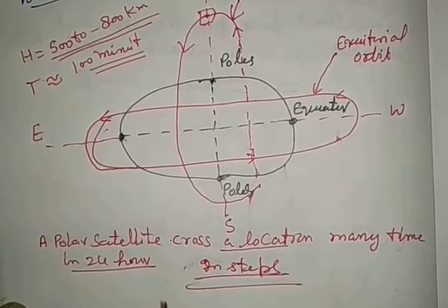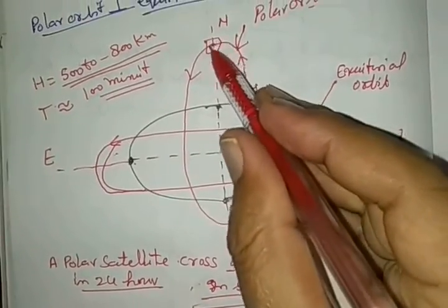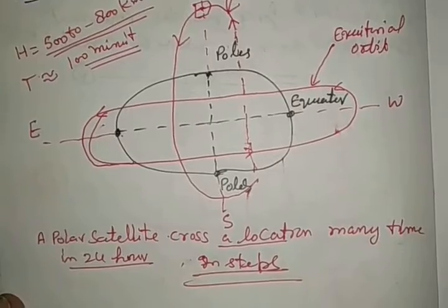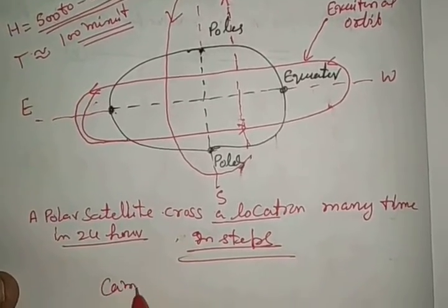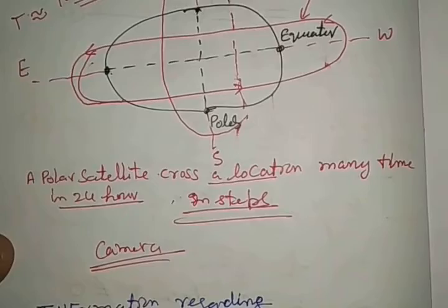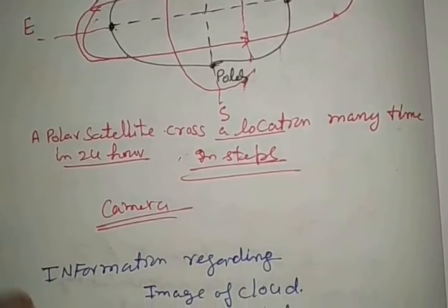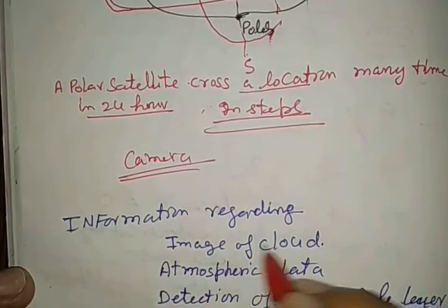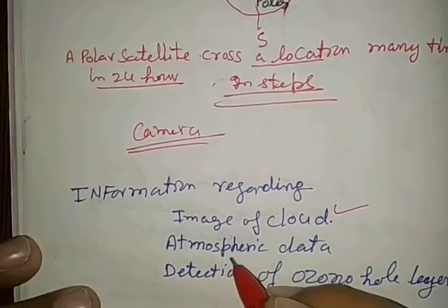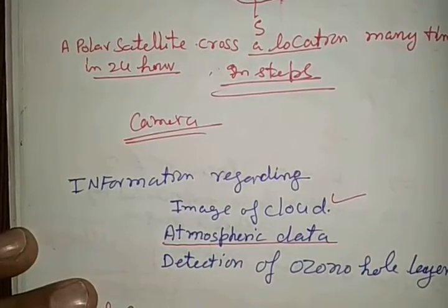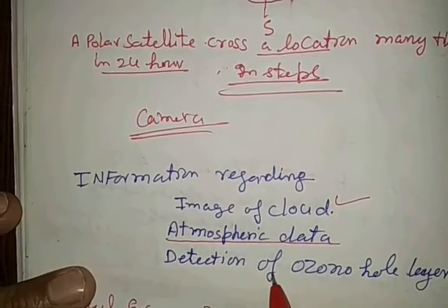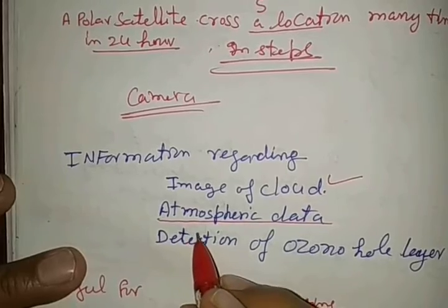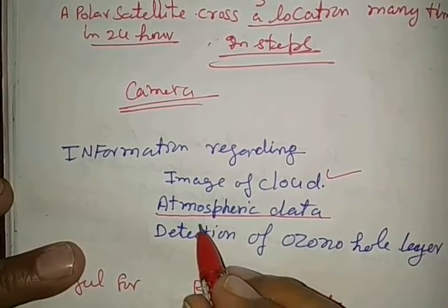So in 24 hours, it crosses a given location many times. When a camera is fitted with this, it takes pictures and collects information regarding images of clouds, atmospheric data, detection of ozone layers, position of dust particles, their size, etc.